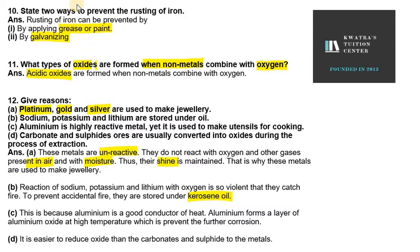Part three: aluminium is a highly reactive metal, yet it is used to make utensils for cooking. Even though it is very reactive, it is still used in utensils because when aluminium is exposed to air it forms a protective aluminium oxide layer on the surface. This oxide layer prevents further corrosion and prevents aluminium from reacting with food. Also, aluminium is a good conductor of heat, which is why it is used in utensils.